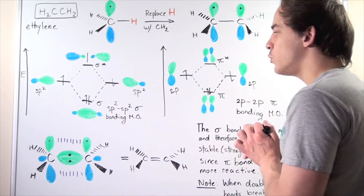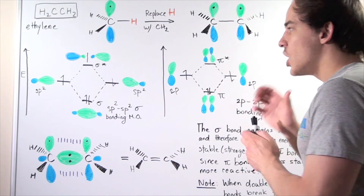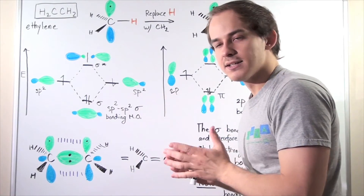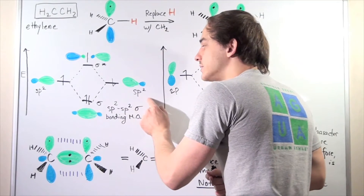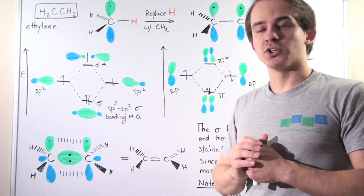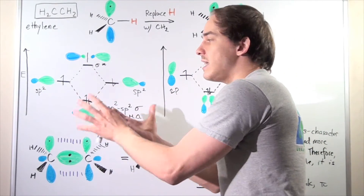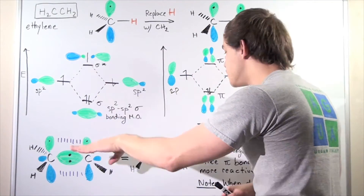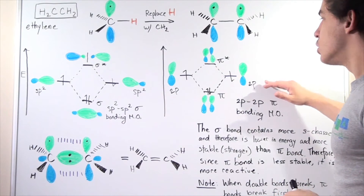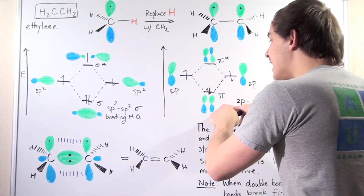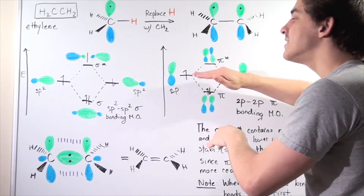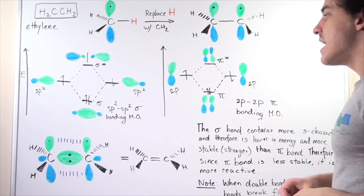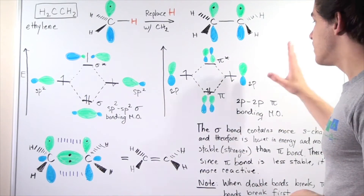Notice the difference between our sigma and pi bonds. Both sp2 hybridized orbitals contain 33.3% s-character, while these 2p orbitals contain no s-character. Because the sp2 orbitals contain the more stable s-character, they are lower in energy. When the 2p orbitals combine to form the pi orbital, this pi orbital is higher in energy than the sp2-sp2 sigma bonding molecular orbital, meaning the sigma bond is more stable than our pi bond.